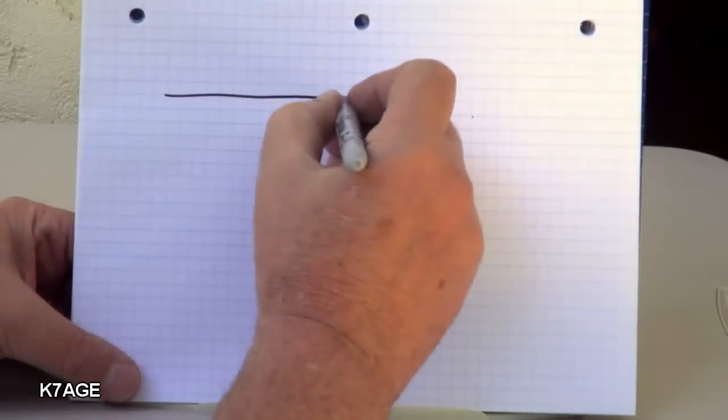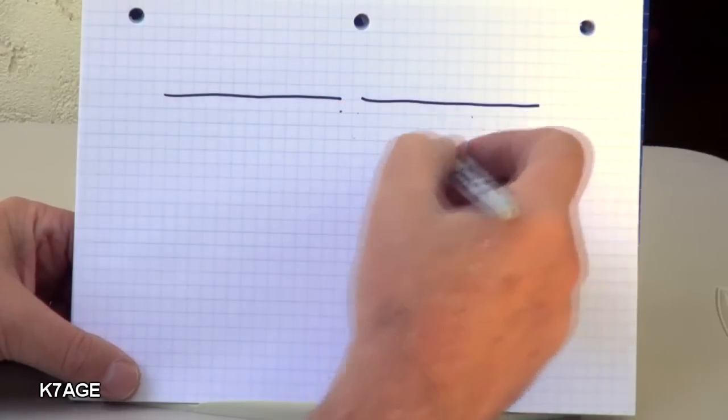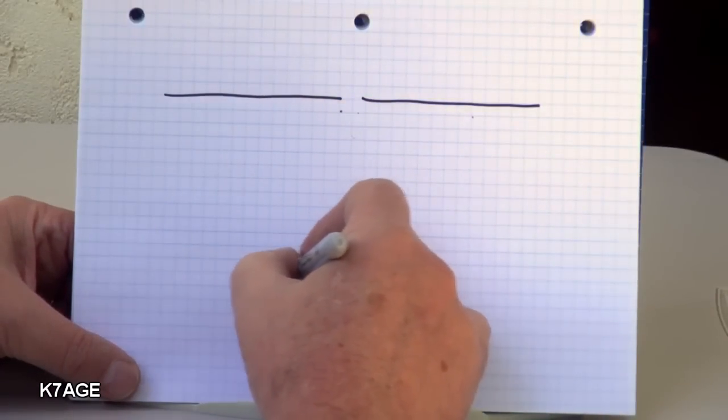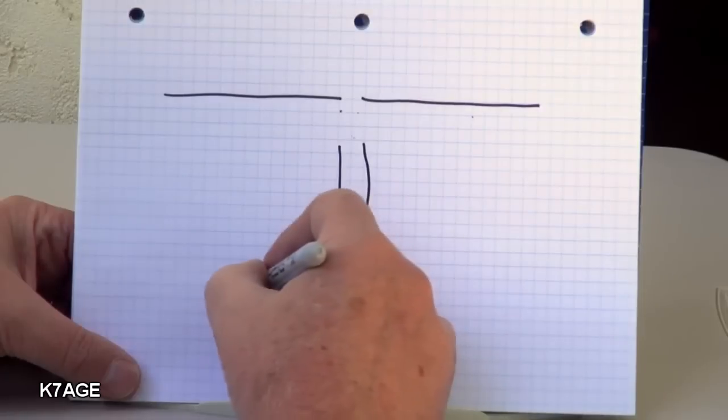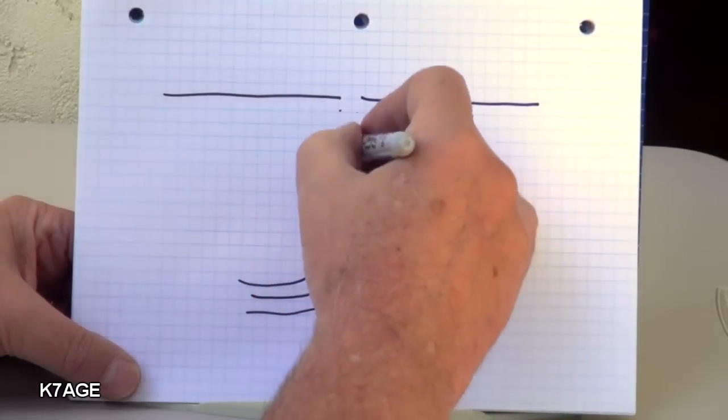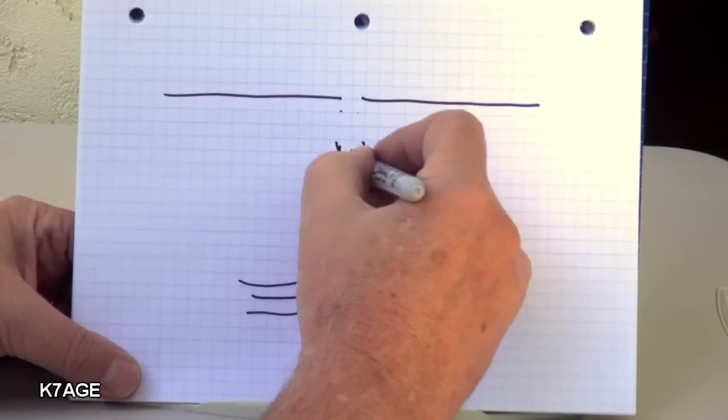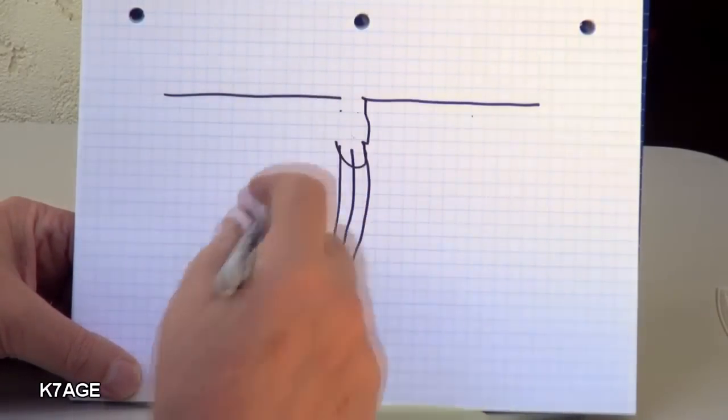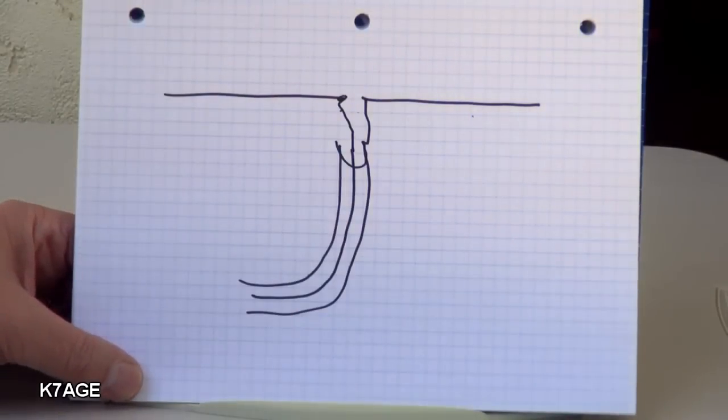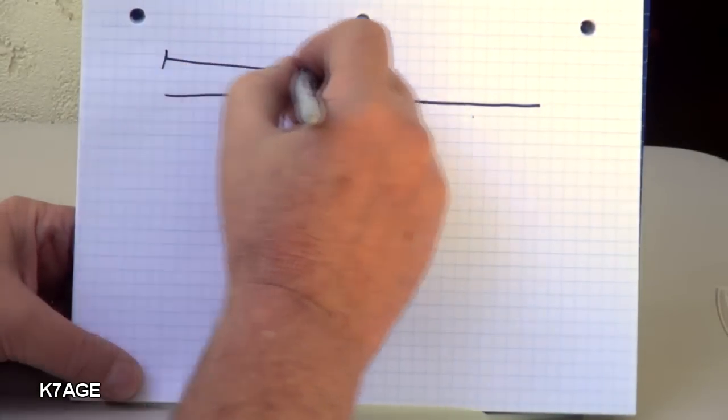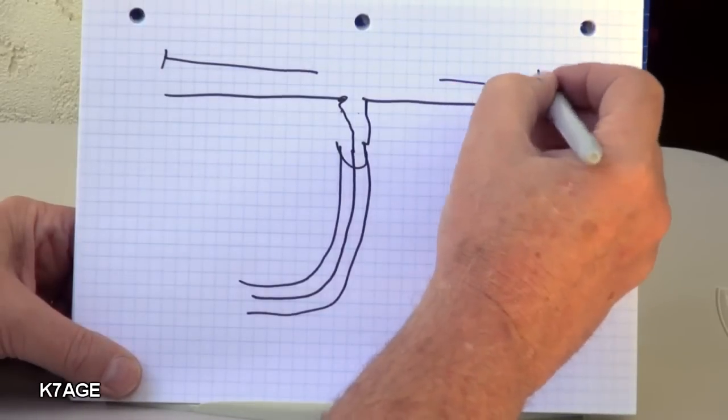So this is made up of two pieces of wire of equal length, and we're going to feed it with coax. The coax is going to come up. That's the outer shield and this is the inner conductor. So the outer shield will connect to one of the wires and the center conductor will connect to the other. And what we need to do here is look at the overall length for the wire.